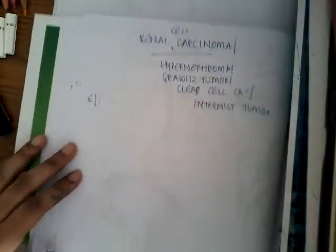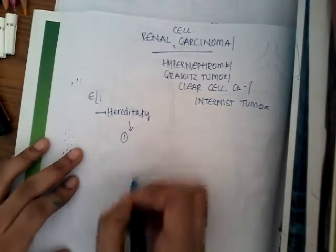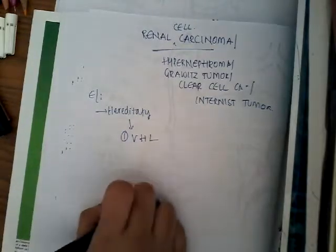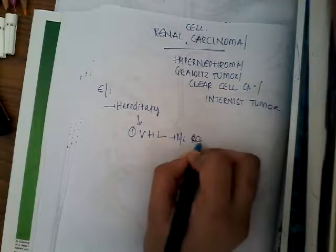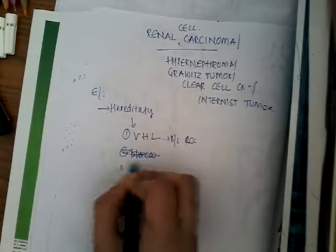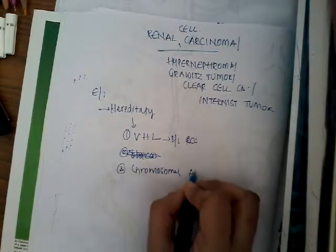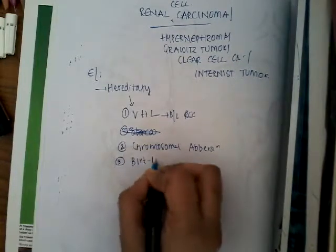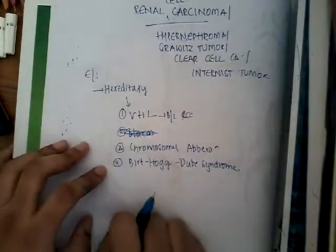What are the etiological features of renal cell carcinoma? It can be hereditary. In the hereditary form, the most common syndrome associated is von Hippel-Lindau syndrome, which has most commonly bilateral renal cell carcinoma. It is common in von Hippel-Lindau disease. There is also Burt-Hogg-Dube syndrome, which is most commonly associated with renal cell carcinoma.